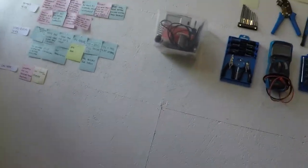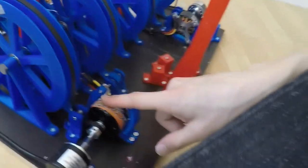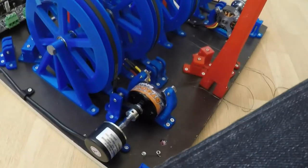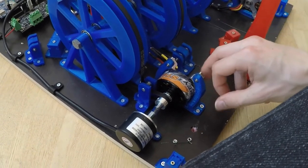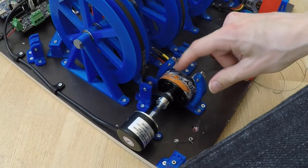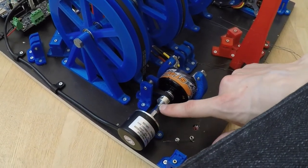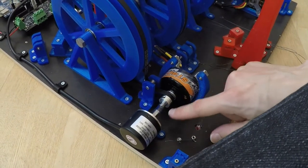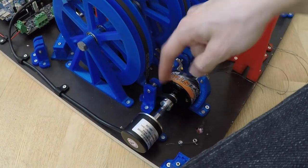I can show you first. Here is the old hangprinter prototype 1. It had the motor mounted on a plastic bracket like that, and there was an encoder here that had to be aligned